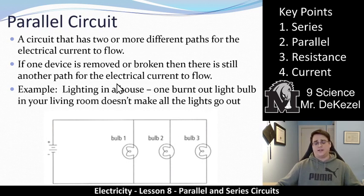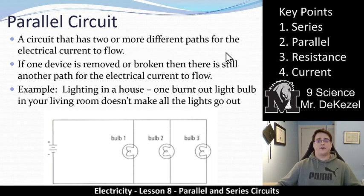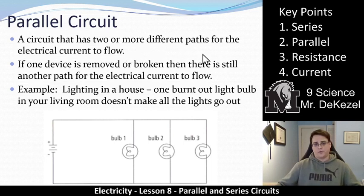A parallel circuit is a circuit that has two or more different paths for the electrical current to flow — not including a voltmeter. A voltmeter does not count as a pathway; it is a measuring device that connects to two points but is not a pathway for current. So, except for a voltmeter, a parallel circuit has multiple paths.